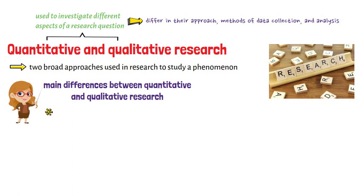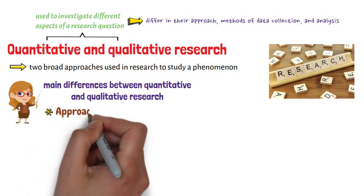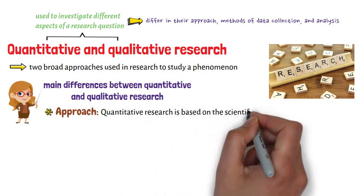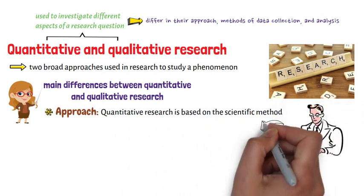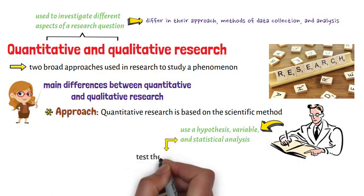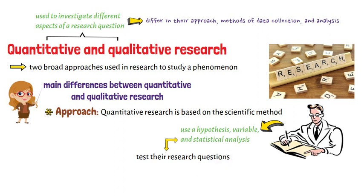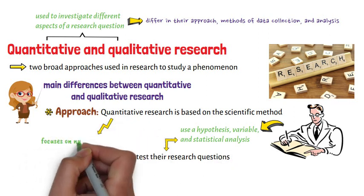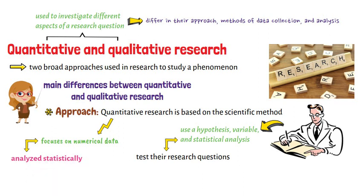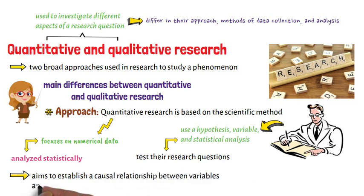In terms of approach, quantitative research is based on the scientific method where researchers use a hypothesis, variable, and statistical analysis to test their research questions. Quantitative research focuses on numerical data, which can be analyzed statistically. This approach aims to establish a causal relationship between variables and is often used to generalize findings to a larger population.